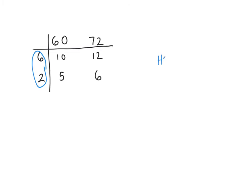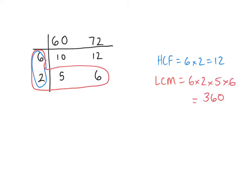My highest common factor is 12 because I times them together. And my lowest common multiple is this L shape, which equals 360.